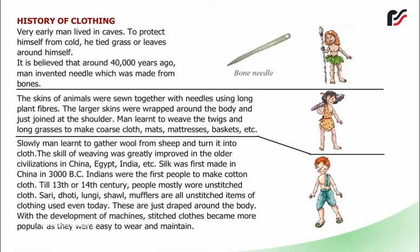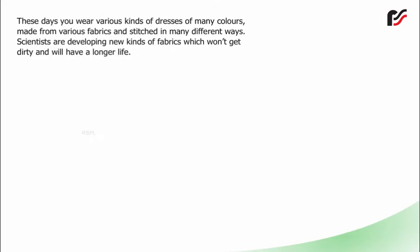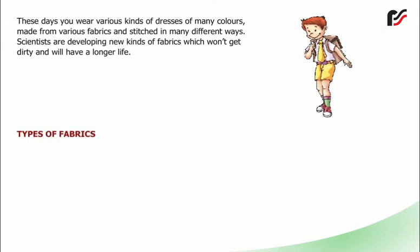Sarees, dhotis, lungis, shawls, and mufflers are all unstitched items of clothing used even today. These are just draped around the body. With the development of machines, stitched cloth became more popular as they were easy to wear and maintain. These days you wear various kinds of dresses of many colors made from various fabrics and stitched in many different ways. Scientists are developing new kinds of fabrics which won't get dirty and will have a longer life.